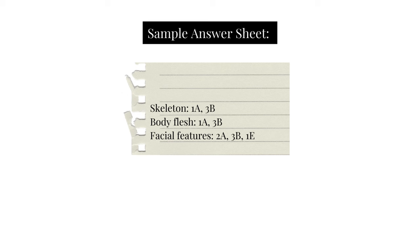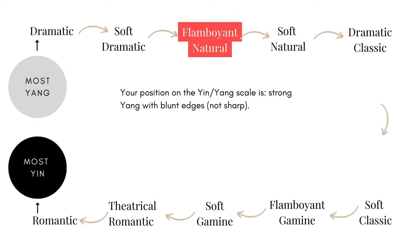Your answers should look something like this: mostly B with some A answers, with some variation also possible. On the yin-yang scale, the Flamboyant Natural is third from most yang, and is characterized as strong yang with blunt edges.